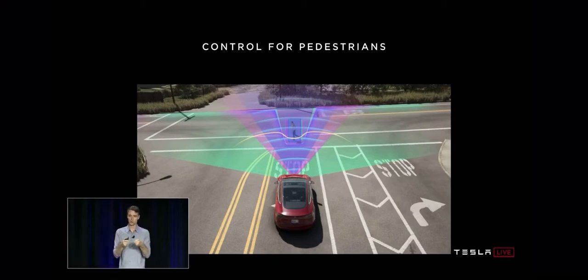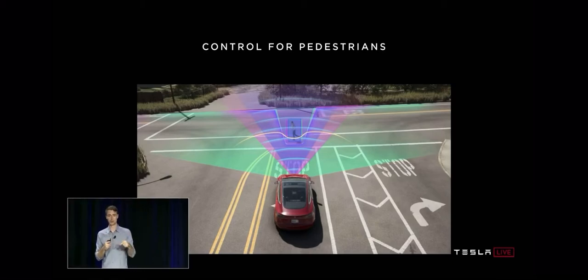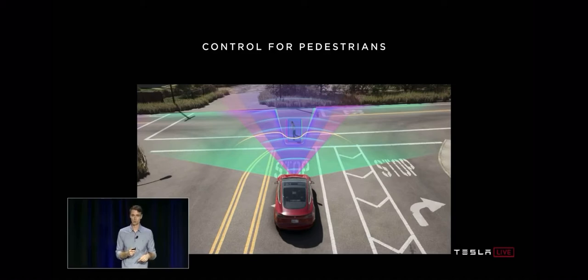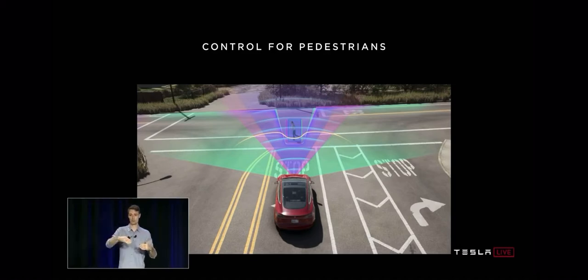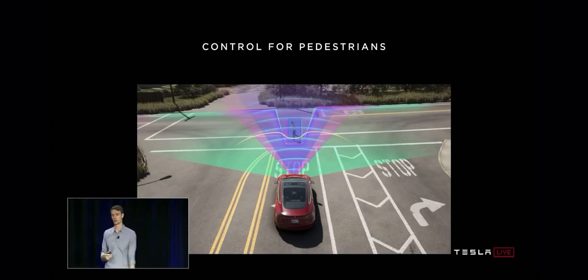This is the heart of what we're doing for our next generation automatic emergency braking system, which will not just stop for people in your path, but will stop for people who are going to be in your path. That's running in shadow mode right now, and we'll go out to the fleet this quarter.